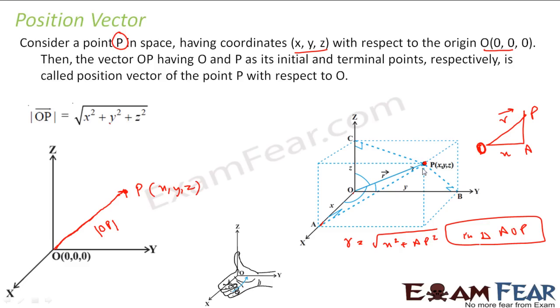AP is nothing but if you see AP in this triangle, this particular triangle. Let this point be N. So AP square is PN square plus AN square, where PN is Z and AN is Y. So AP square is Y square plus Z square.